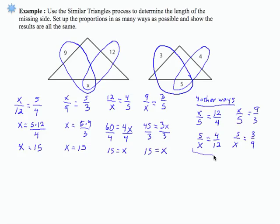And you should work these out to verify for yourself that all the x's equal 15. So just in these two similar triangles, finding one unknown, there are eight different ways to set up the problem correctly.